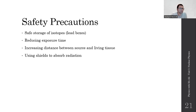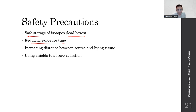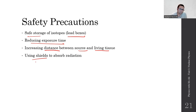Safety precautions when working with radioactive materials: store sources in lead boxes with locks, kept in locked cupboards. Reduce exposure time — even a few seconds can be significant. Increase the distance between the source and living tissue. Use shields — mainly lead walls or lead-lined materials — which stop almost all types of radiation.